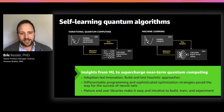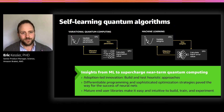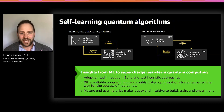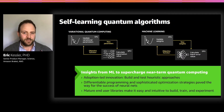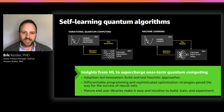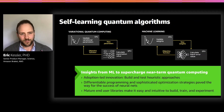The second point is that differentiable programming and sophisticated optimization strategies in this optimization loop are the key to the widespread success of neural networks. And the quantum computing community is really just getting started to explore these topics, and a lot is still left to be uncovered. The third point that helped machine learning achieve such widespread adoption was that there are mature end-user libraries that make it easy and intuitive to build, train, and experiment with machine learning. And we want to bring that experience to quantum computing.